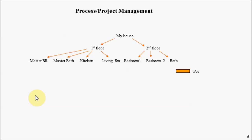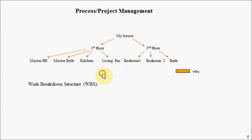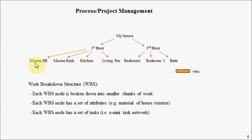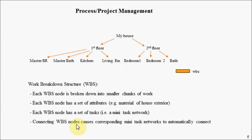Let's look at how to apply the TCSQL capabilities toward developing a process/project management application. Imagine we have a house that we want to build, broken down into first floor and second floor, broken down into various rooms. We're going to utilize the notion of a work breakdown structure, where each node is broken down into smaller chunks of work. At each level of abstraction, there are attributes — a collection of tasks that must be accomplished with a temporal relationship between them — forming a mini task network for each level.